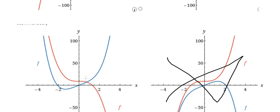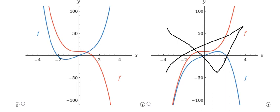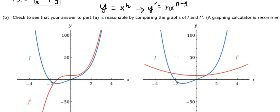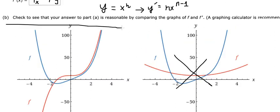We have three graphs remaining. The first derivative has a highest power of x to the power of three with a positive coefficient of four. This means when x goes to negative infinity the derivative goes to negative infinity, and when x goes to positive infinity it goes to positive infinity. Based on this, we can eliminate the incorrect graphs and select the correct one here.